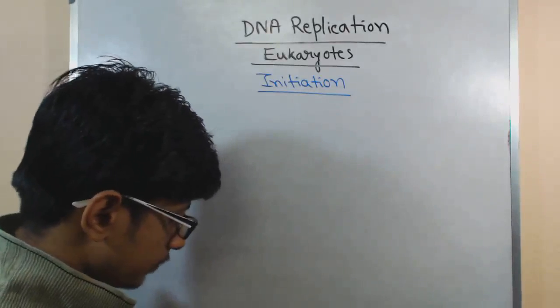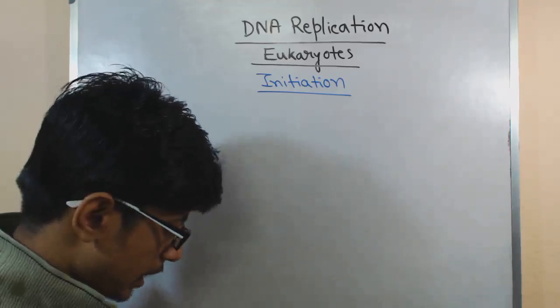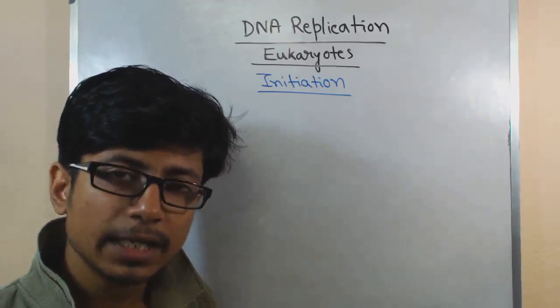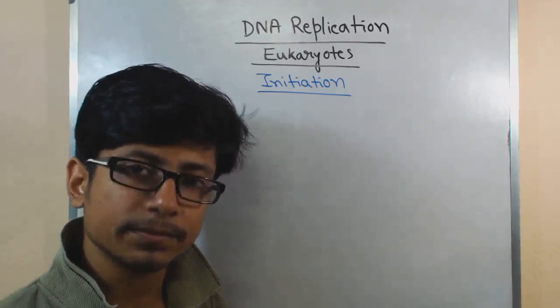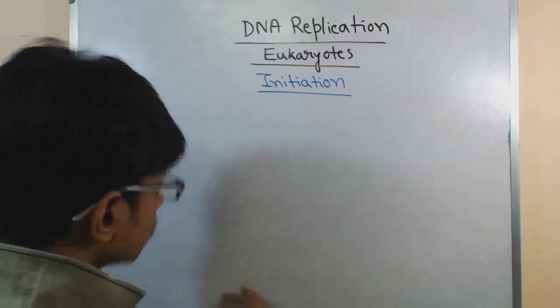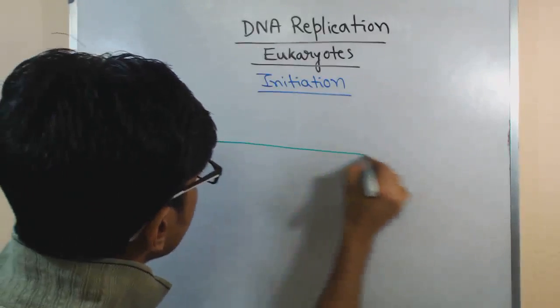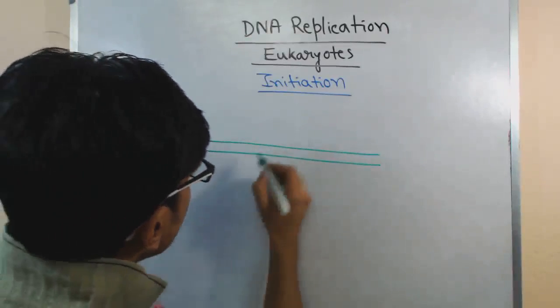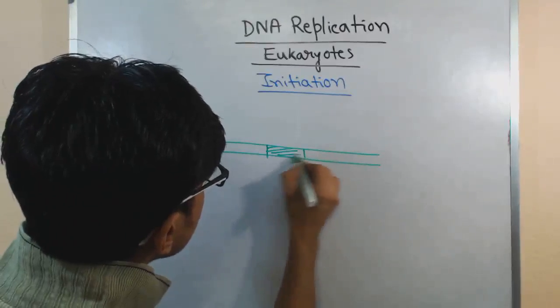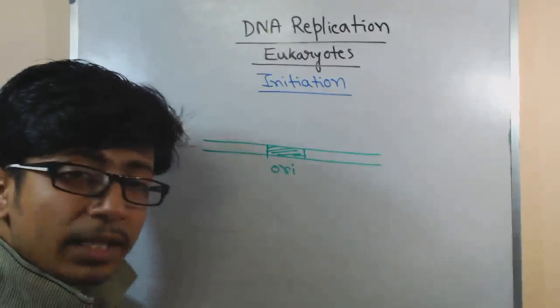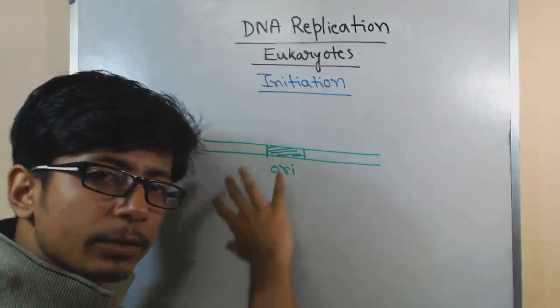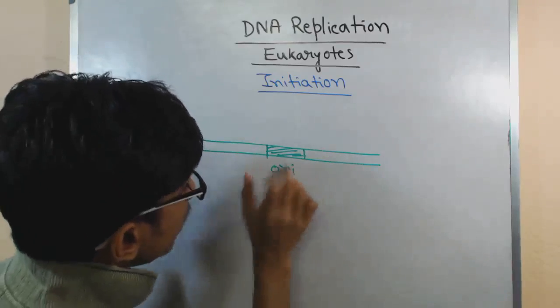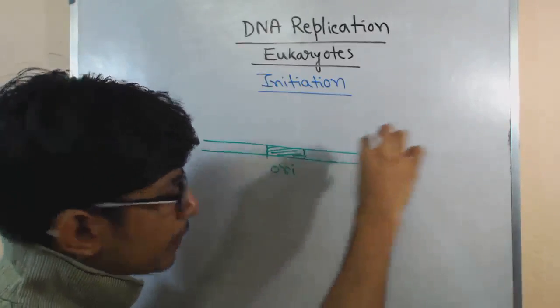If you see here, initiation phase of DNA replication starts with the specific region of the eukaryotic DNA which serves as the origin of replication or ORI. Let us look at the structure here. Let us say this is the DNA and this is a particular section we call ORI or origin of replication. There will be multiple ORIs present in the eukaryotic DNA.